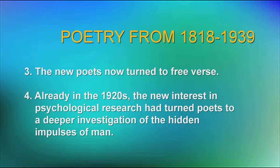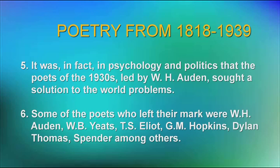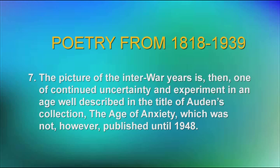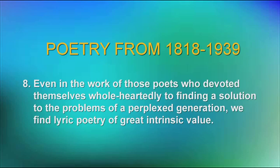Already in the 1920s, the new interest in psychological research had turned poets to a deeper investigation of the hidden impulses of man. It was in fact in psychology and politics that the poets of the 1930s, led by W.H. Auden, sought a solution to the world problems. Some of the poets who left their mark were W.H. Auden, W.B. Yeats, T.S. Eliot, G.M. Hopkins, Dylan Thomas, and Spender, among others. The picture of the interwar years is then one of continued uncertainty and experiment in an age well described in the title of Auden's collection, The Age of Anxiety, which was not, however, published until 1948. In such an age, it is natural to find a great proportion of didactic verse. However, even in the work of these poets who devoted themselves most wholeheartedly to finding a solution to the problems of a perplexed generation, we find lyric poetry of great intrinsic value.